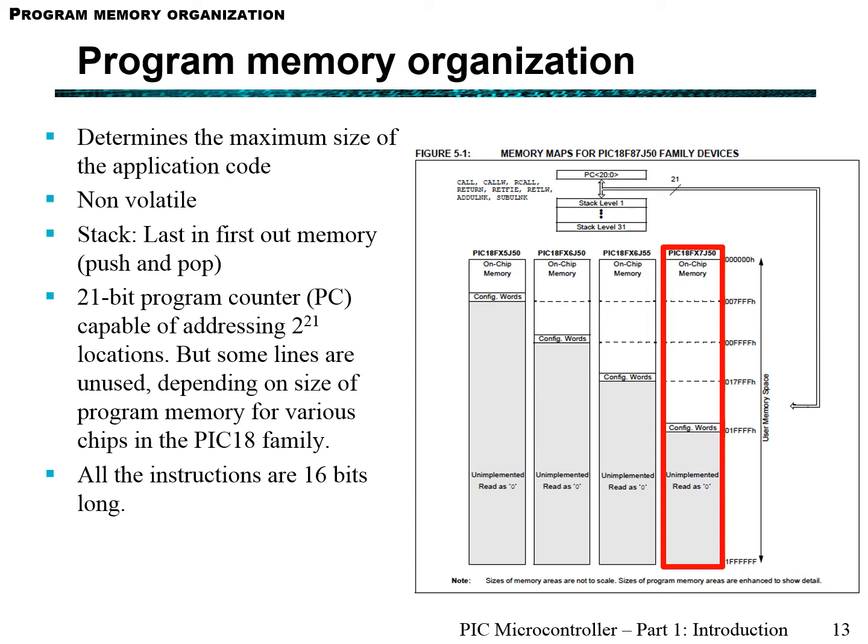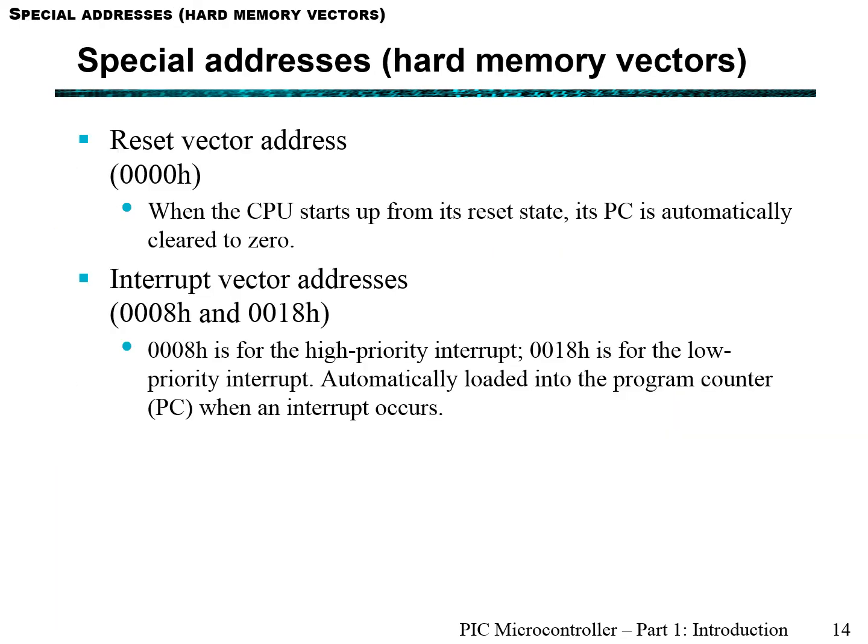The program counter looks at different instructions at different priorities. Microcontrollers have special addresses which are hardwired into the microchip — microcontrollers don't have a BIOS. Every time they start up, the reset vector is called, which resets the state of the microcontroller. There are also another type of special address called interrupt vector addresses, and they implement subroutines. Subroutines are calls that happen when you want to interrupt your normal program. Interrupts change the program counters to prioritize different instructions at different priorities based on what event occurs.